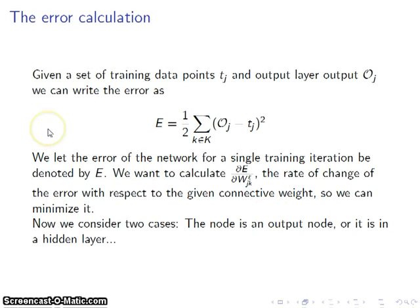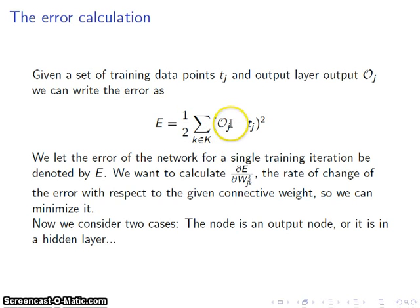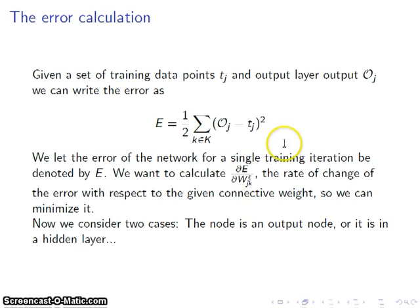The error calculation is given like this. So let's assume that we have a set of data points T sub k, which is our training data, and the output layer output script O sub k. We can write down the error equation like this: E equals one half the sum across all nodes in the output layer of the output minus the target value, quantity squared. And what we're going to do is calculate the rate of change of the error with respect to weight sub jk, and use that to do essentially gradient descent on the gradient of this expression with respect to the weights, propagating that backwards through the network.